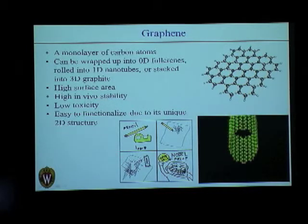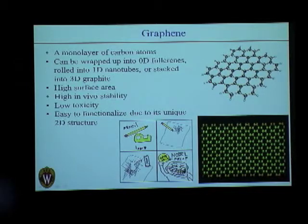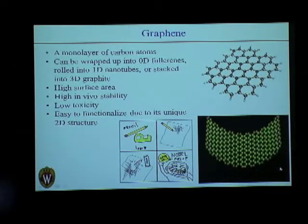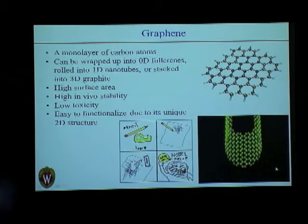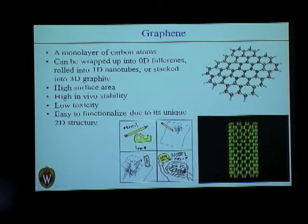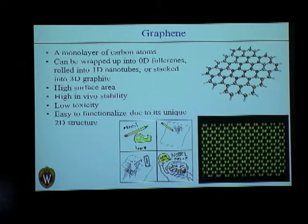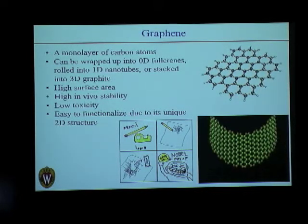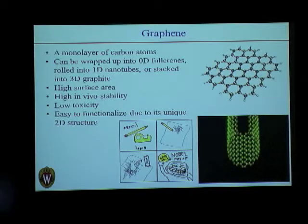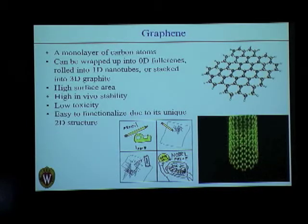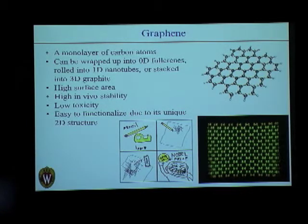Apart from high surface area shared by all nanomaterials, graphene has been shown to have high physiological stability and low toxicity. It is also very easy to functionalize because of its planar sheet-like structure, making it straightforward to attach molecules onto it.